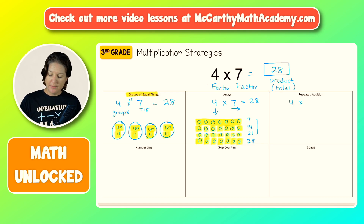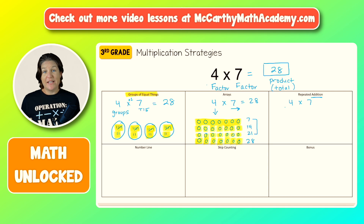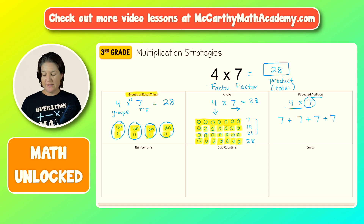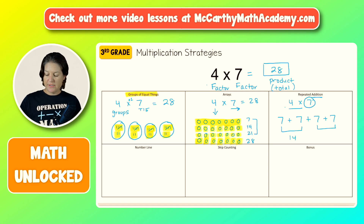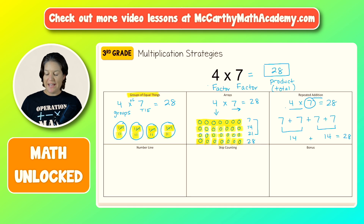Let's connect it to repeated addition. Four times seven — you might be thinking, repeated addition? I thought we were doing multiplication. Well, multiplication and addition are connected. Multiplication is actually just repeatedly adding the same thing over and over again. So what we're going to do is add seven four times: seven plus seven plus seven plus seven. Breaking that down, seven and seven is fourteen, and this seven and seven is fourteen, and fourteen plus fourteen equals twenty-eight.